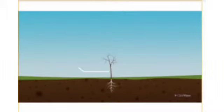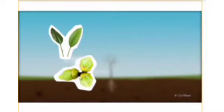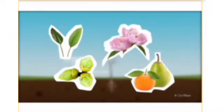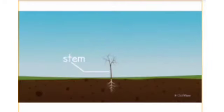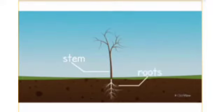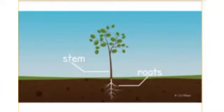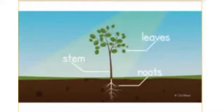The stem is the main part of the shoot. Leaves, buds, flowers and fruits grow on it. The stem helps plants to grow upright and carries water, minerals and nutrients from the roots up to the leaves. The leaves use sunlight to create their own food, and the stem carries this food to the rest of the plant.